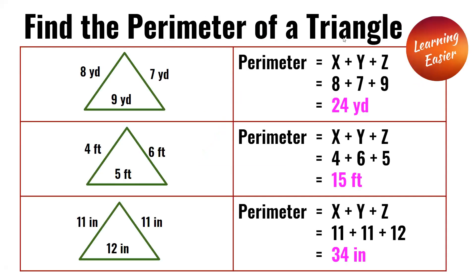Find the perimeter of a triangle. In the first triangle, the side lengths are 8 yards, 7 yards, and 9 yards. 8 plus 7 plus 9 is 24 yards, and 24 yards is the perimeter.